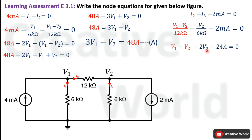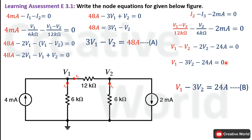Adding the variable terms together: −2V2 − V2 becomes −3V2. Placing the constant −24 on the other side of the equation gives the node equation: V1 − 3V2 = 24.